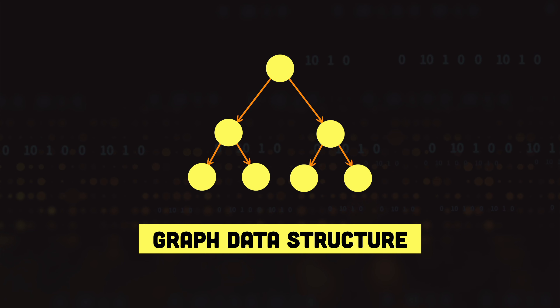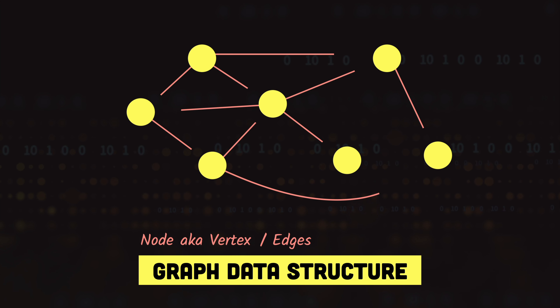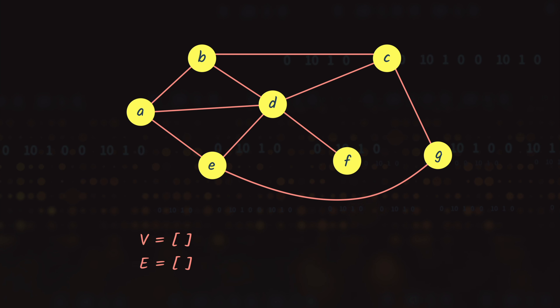Graph data structure is similar to the tree data structure in the sense that we still have nodes, which are also called the vertices of the graph. The singular form is called vertex, and these vertices are connected with the help of edges. If you look at this graph we have seven nodes or seven vertices. If we label these vertices alphabetically, representing vertices with V and edges with E, the vertices would be A, B, C, D, E, F, and G.